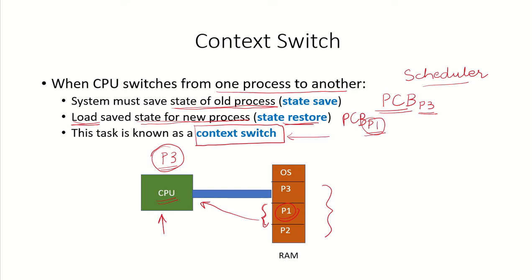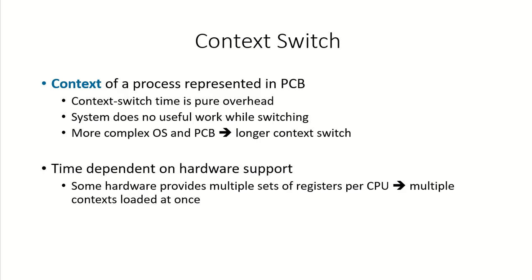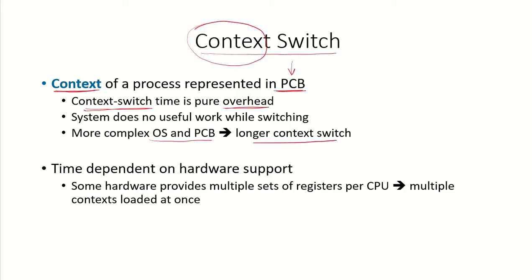We call this a context switch because the context is represented in the process control block, and the system is switching from one context — the information stored in one PCB — to another context, taking information from another process control block. The time taken by this context switch is a pure overhead on the system. At this time the CPU is sitting idle and not doing any useful work. The more complex the operating system and the process control block, the longer the context switch will take, because more information will have to be saved and restored for the new process.